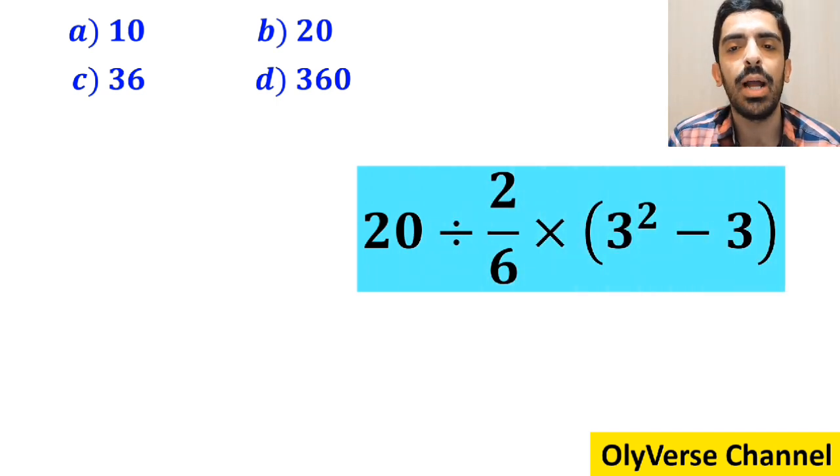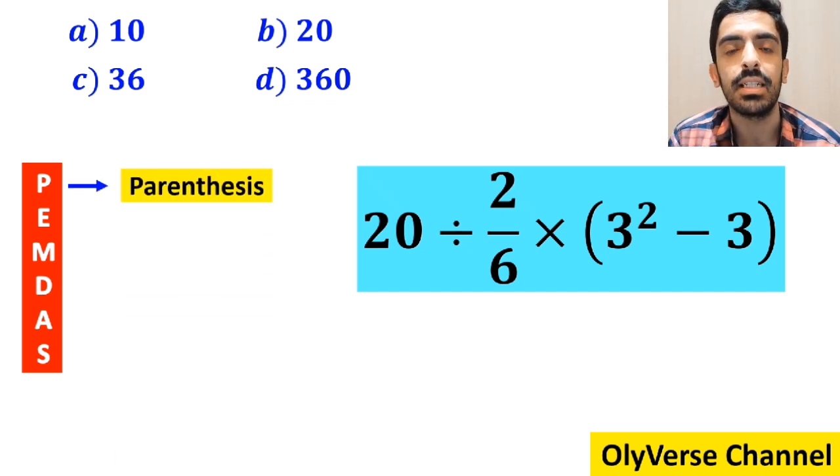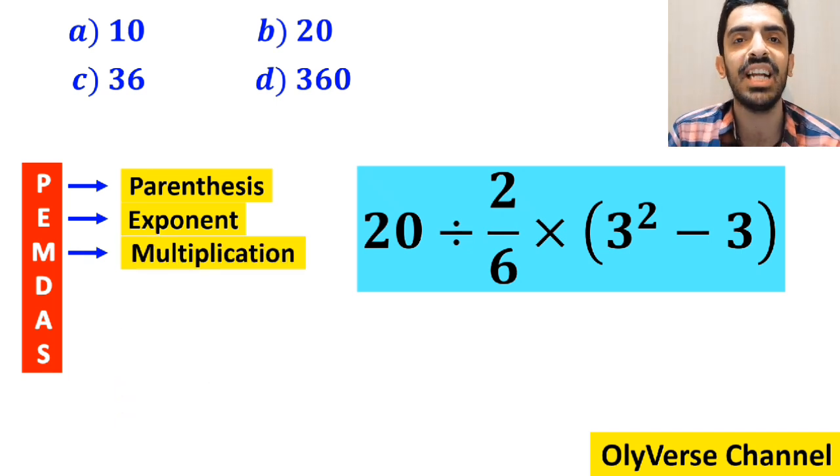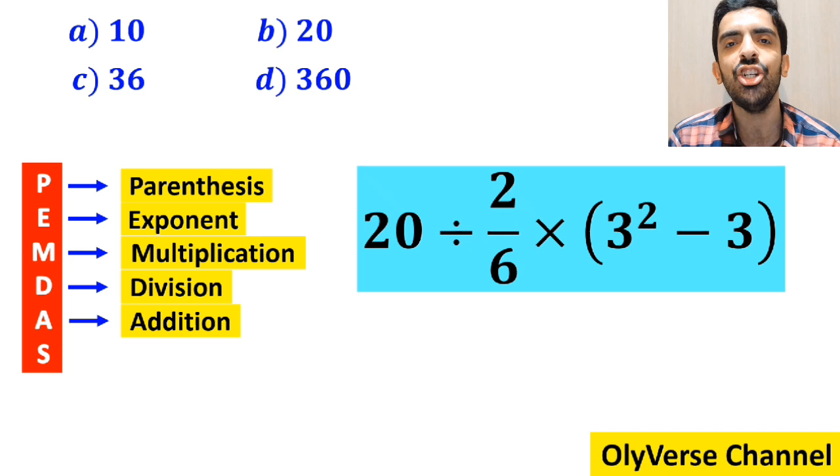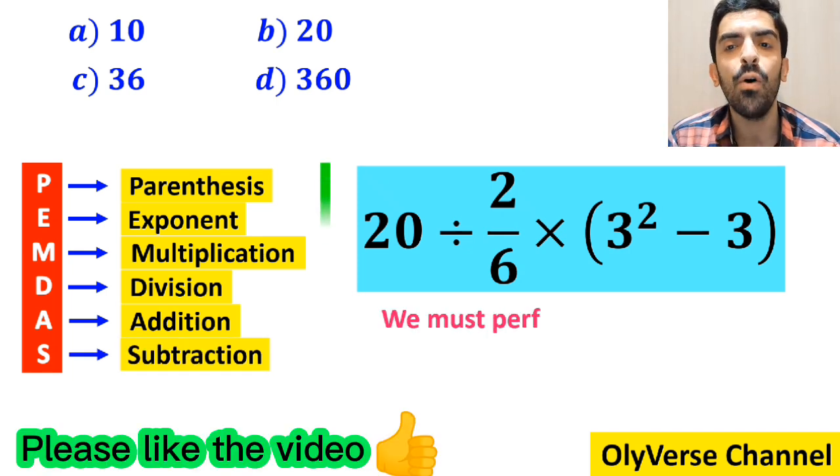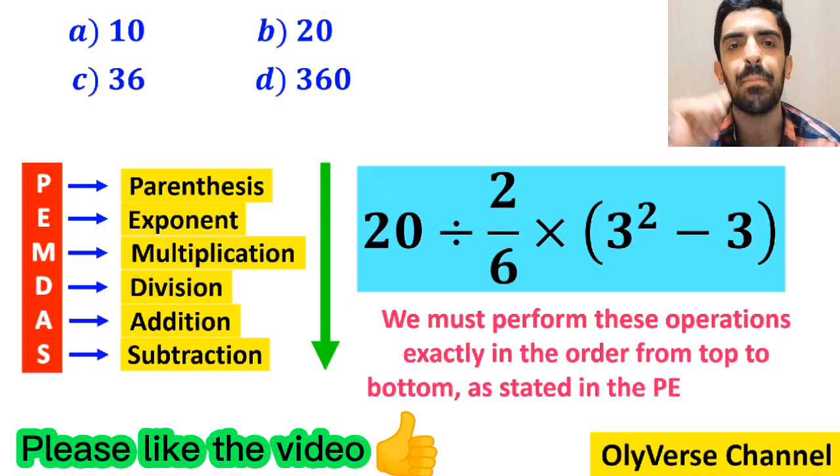To solve this problem, we need to follow a rule that is called PEMDAS. In this rule, P stands for parenthesis, E stands for exponent, M stands for multiplication, D stands for division, A stands for addition, and S stands for subtraction. We must perform these operations exactly in order from top to bottom as stated in the PEMDAS rule.